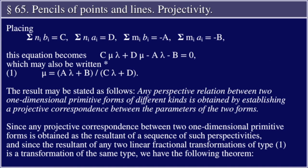Placing Σnᵢbᵢ = c, Σnᵢaᵢ = d, Σmᵢbᵢ = −a, Σmᵢaᵢ = −b, the equation becomes cμλ + dμ − aλ − b = 0, which may be written — Equation 1 — μ = (aλ + b) / (cλ + d).